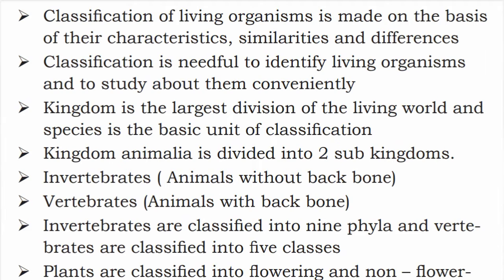Kingdom Animalia is divided into two sub-kingdoms: invertebrates and vertebrates. Invertebrates are classified into nine phyla, and vertebrates are classified into five classes.